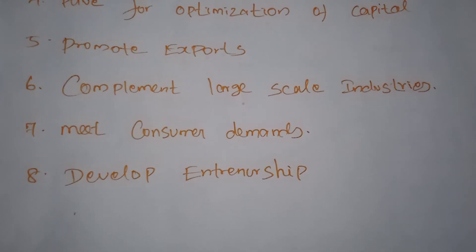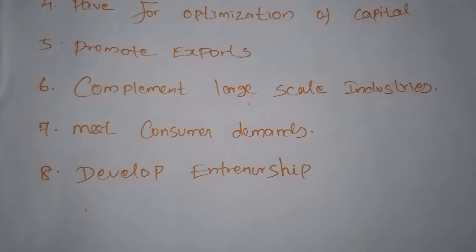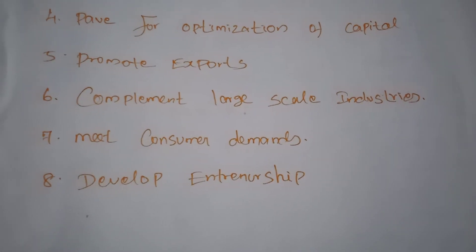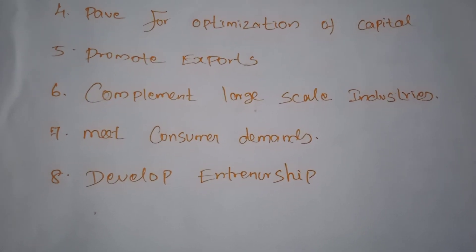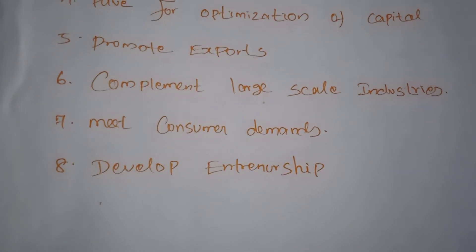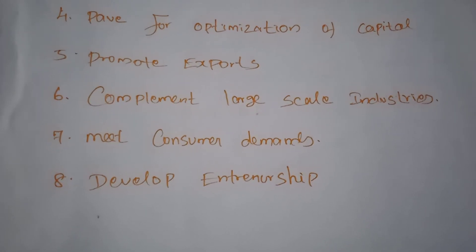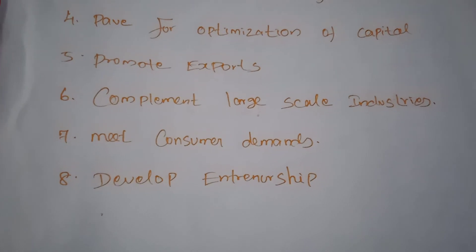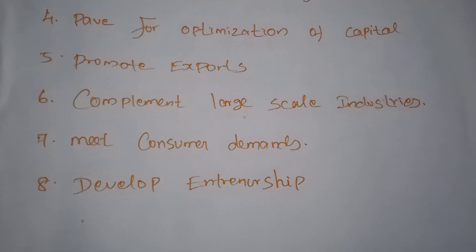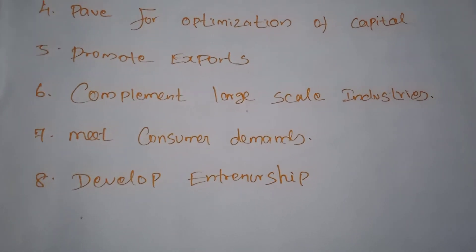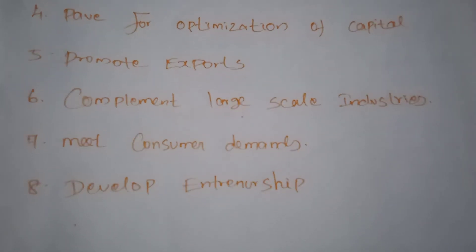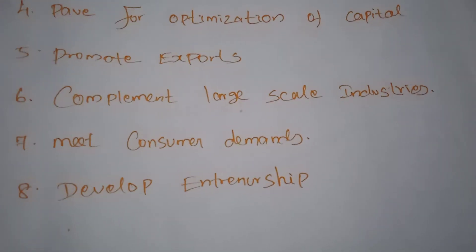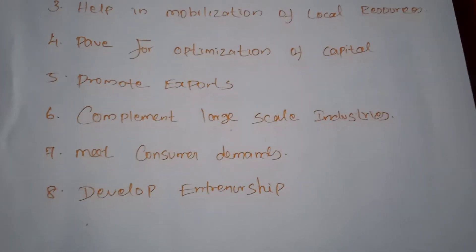Next, small-scale industries play a complementary role to large-scale sectors. The semi-finished products used by large-scale industries are produced by small-scale industries. Even if large-scale industries could produce those items, small-scale industries produce them at lower cost using local resources. Large-scale industries always purchase raw materials and semi-finished products from small-scale industries. Small-scale industries provide parts, components, and accessories to large-scale industries, meeting their requirements, and thus the profit of large-scale industries depends on the productivity of small-scale industries.